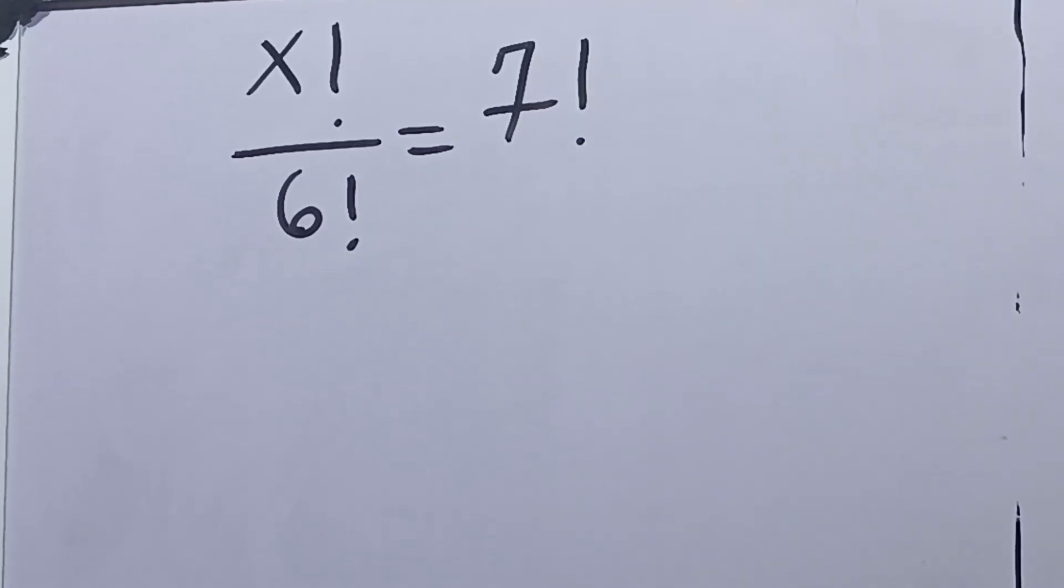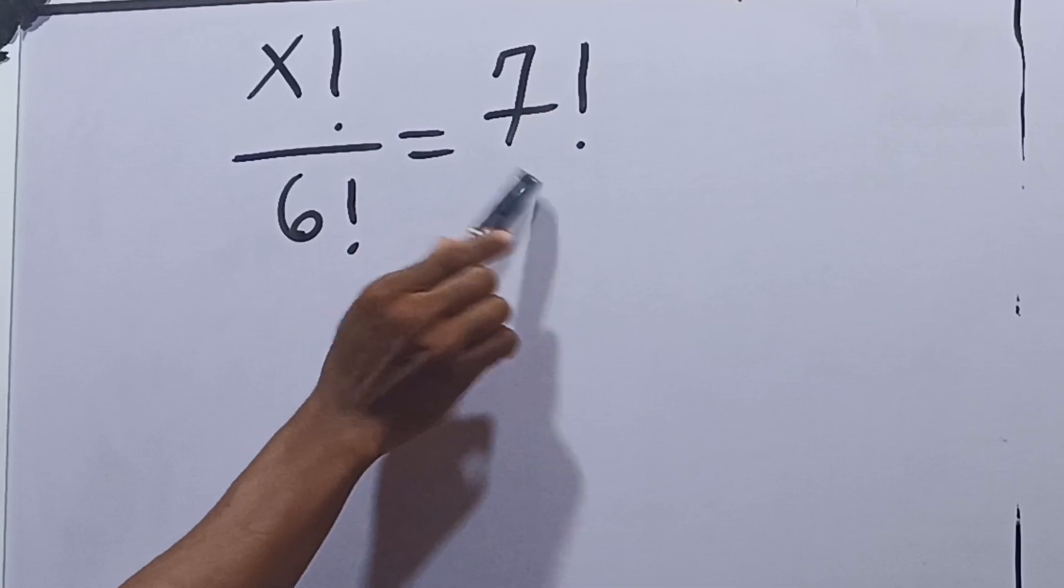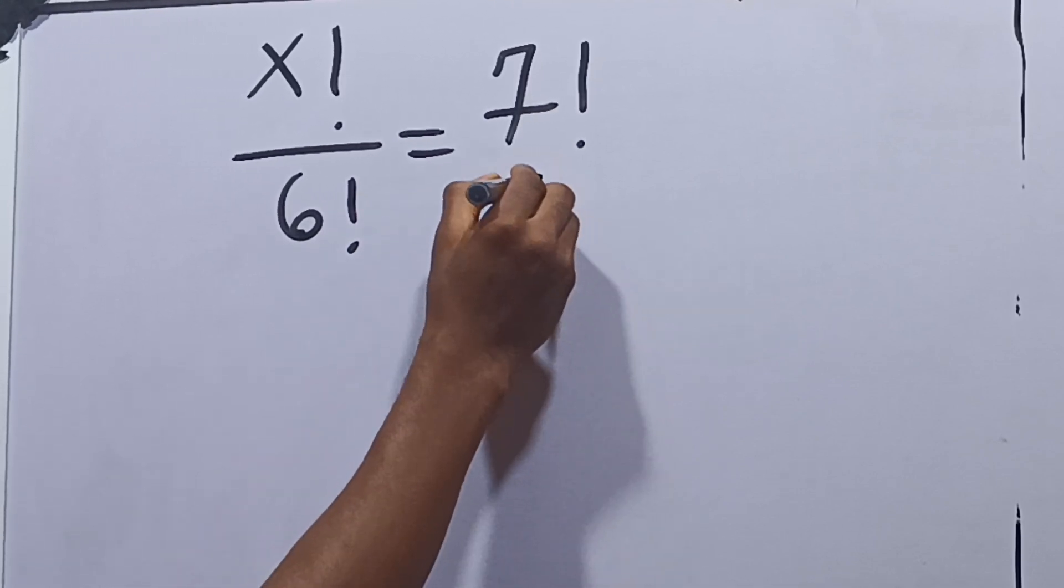Let's solve this equation together. It says x factorial over 6 factorial is equal to 7 factorial, and we're going to solve for the value of x.